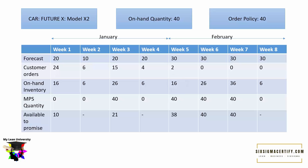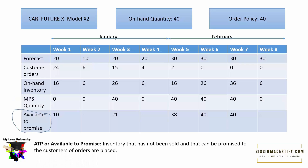We can calculate on-hand inventory and MPS quantity this way for all weeks. MPS quantity is the actual output of production — how much must be produced before a given time period to satisfy customer demand. Available-to-Promise (ATP) is the inventory that has not been sold and can be promised to customers when orders are placed. The on-hand quantity before week one was 40. In week one we have 24 customer orders and week two has 6, totaling 30. So 40 minus 30 means we can promise 10 units for weeks one and two combined.